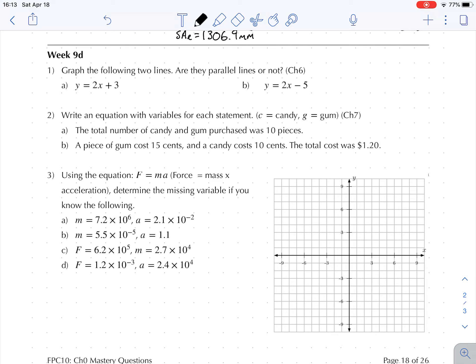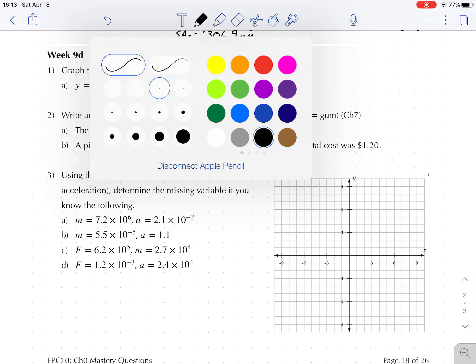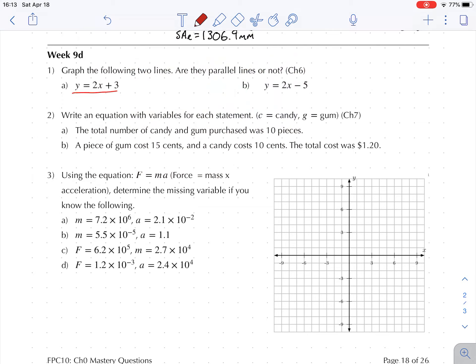Let's take a look at the mastery items, week 9 section D, question 1. Graph the following two lines - are they parallel or not? All right, let's take a look at these two lines. Our first line here is in the form y equals mx plus b. Very nice, that means it's easy to graph. Our slope is 2, m is equal to 2 over 1, and our start point is equal to plus 3.